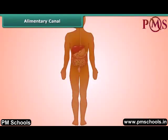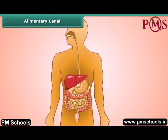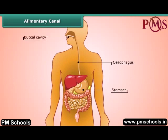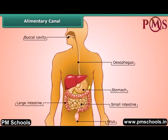You will be surprised to know that the food inside our body passes through an alimentary canal, or simply the digestive tract. It consists of the buccal cavity, food pipe or esophagus, stomach, small intestine, large intestine, and the anus. Now let us know what happens to the food in the different parts of the digestive tract.